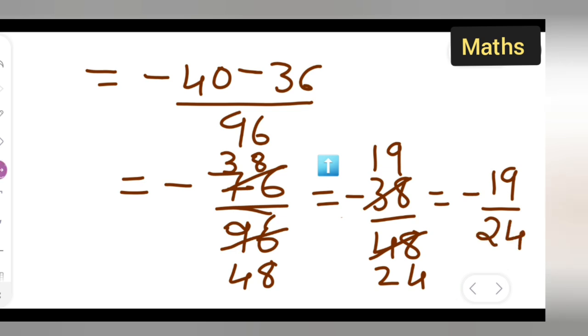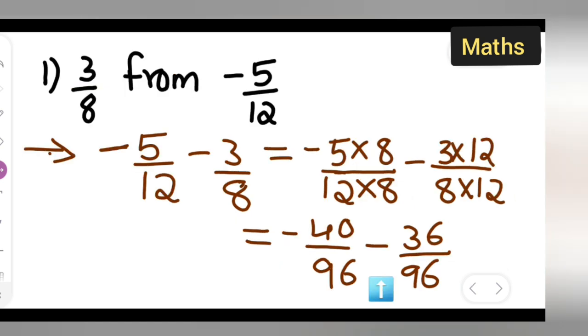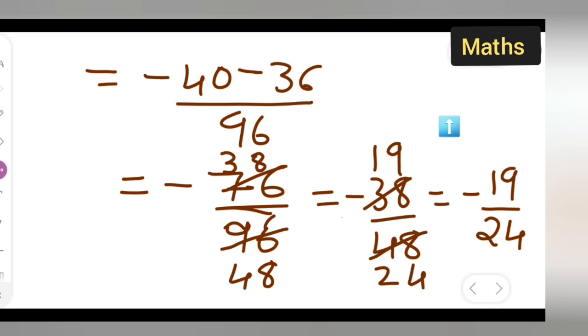So this is the answer what you get after subtracting. I hope you have understood how to subtract 3/8 from -5/12. Thanks for watching. If you have any doubts or queries you can comment below. Don't forget to like, subscribe my channel and share with your friends.